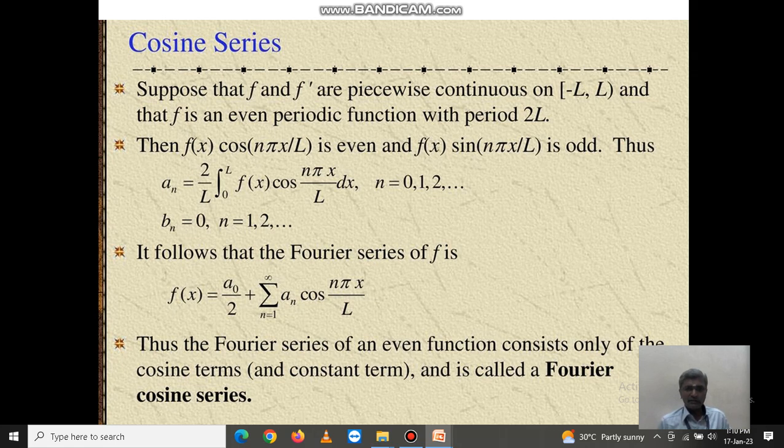It follows that the Fourier series of f is, when the function is in cosine series, f(x) equals a0 over 2 plus summation n equals 1 to infinity of an cos(n pi x over l). So here bn equals 0.